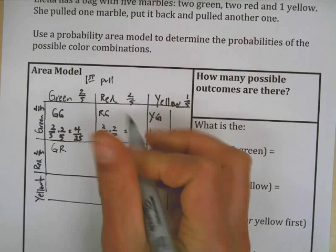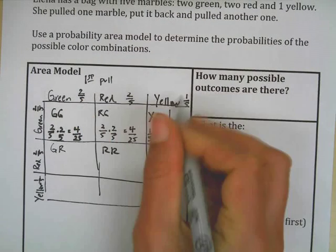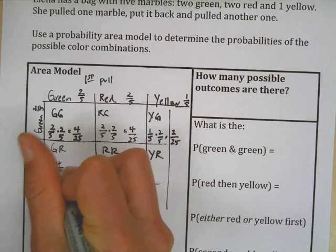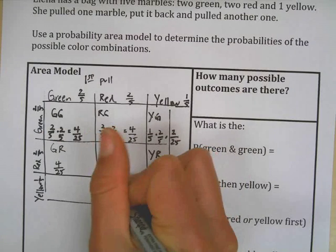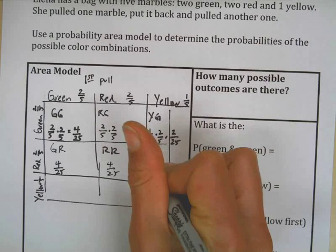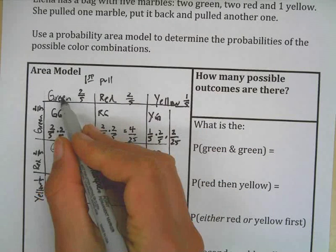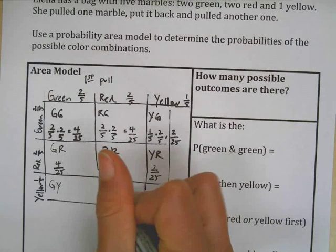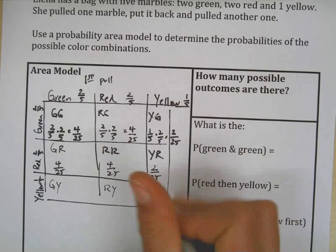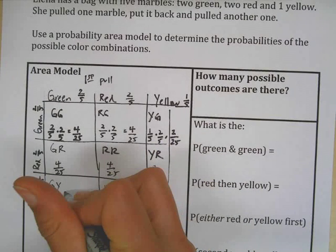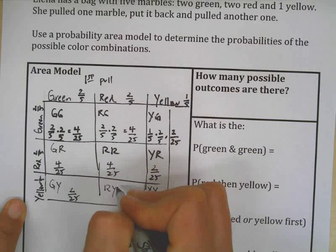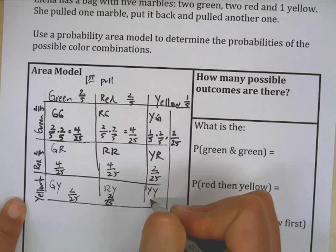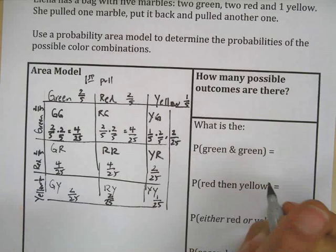Okay, so let's finish up so you can compare with what I did. So the next one is green then red, red then red, yellow then red. And the probability is two-fifths times two-fifths, so we've already done that a number of times: four twenty-fifths. Two-fifths times two-fifths, four twenty-fifths. One-fifth times two-fifths, two twenty-fifths. Last row is green and yellow, red and yellow, yellow and yellow. And this was two-fifths times one-fifth, so this is two twenty-fifths. This is two-fifths times one-fifth, so two twenty-fifths. And the last one is one-fifth times one-fifth, or one twenty-fifth.